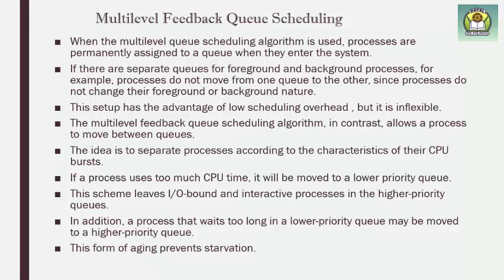The setup has the advantage of low CPU scheduling overhead — there is no preemption and no context switch, so there is no overhead. But the problem is that once a process is allocated to a queue, it can never change the queue, even if the priority of the process is higher. To solve this problem, a new algorithm called multi-level feedback queue scheduling is introduced.